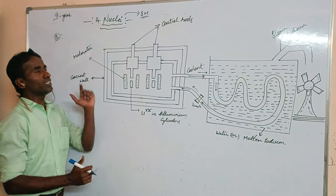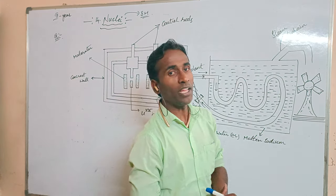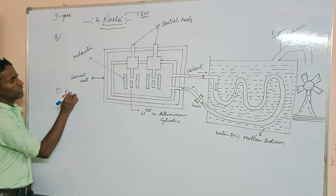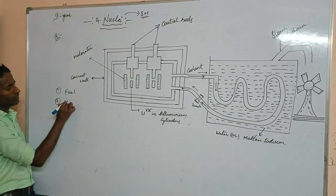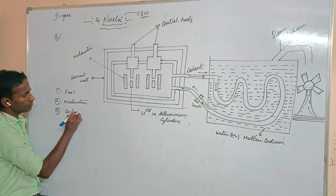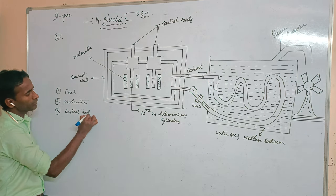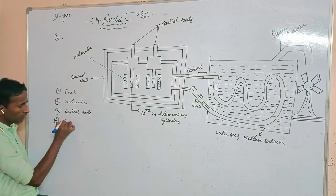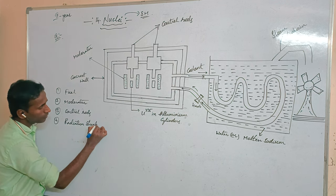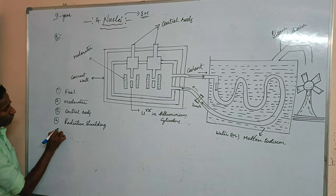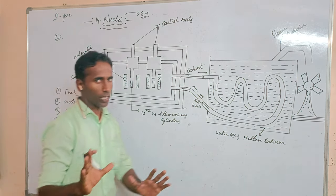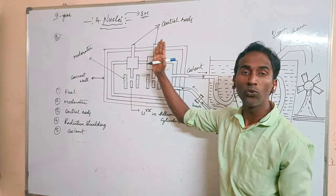Like that, in the nuclear reactor, it works on the principle of controlled chain reaction. In that controlled chain reaction, we have five main features: first is fuel, second is moderator, third is control rods, fourth is radiation shielding, and fifth is coolant. These are the main features of a nuclear reactor.